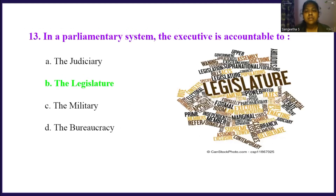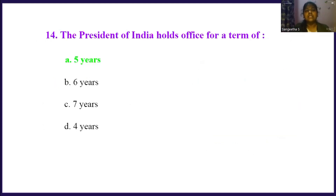In a parliamentary system, the executive is accountable to: Option A, the judiciary. Option B, the legislature. Option C, the military. Option D, the bureaucracy. The right answer is option B, the legislature. Next, the president of India holds office for a term of: Option A, 5 years. Option B, 6 years. Option C, 7 years. Option D, 4 years. The right answer is option A, 5 years. The president of India holds office for a term of 5 years.